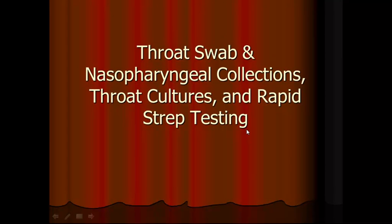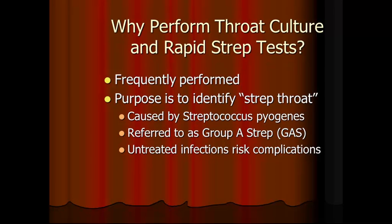Throat swabs, nasopharyngeal collection, throat cultures, and rapid strep testing lecture. So why do we perform throat culture and rapid strep tests? They are frequently performed, especially in the wintertime months. The purpose is to identify strep throat, which is caused by a bacteria called Streptococcus pyogenes, referred to as group A strep or GAS. If left untreated, the infection can cause many complications such as rheumatic fever and scarlet fever.